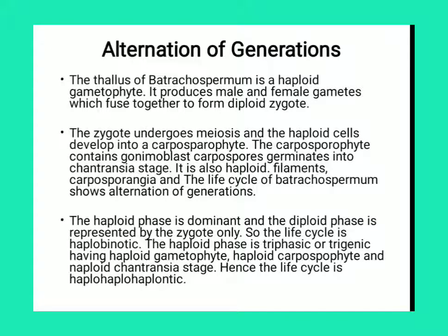Then, alternation of generation: the life cycle is known as alternation of generation. The thallus of Batrachospermum is a haploid gametophyte. It produces male and female gametes which fuse together to form a diploid zygote. The zygote undergoes meiosis and haploid cells develop into the carposporophyte. The carposporophyte contains gonimoblast; the carpospores germinate into the Chantransia stage, which is also a haploid filament. The life cycle of Batrachospermum shows alternation of generation, with the haploid phase dominant and the diploid phase represented only by the zygote — so it is a haplobiotic life cycle.